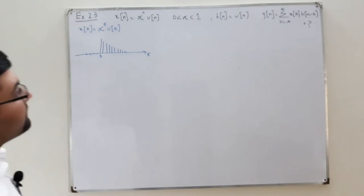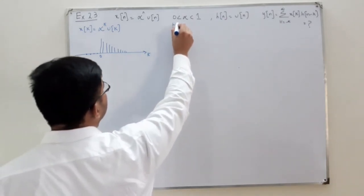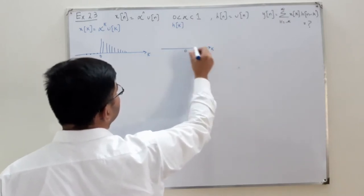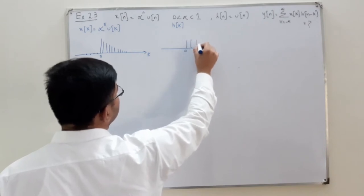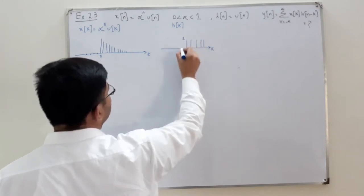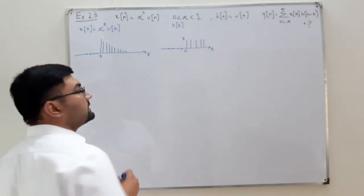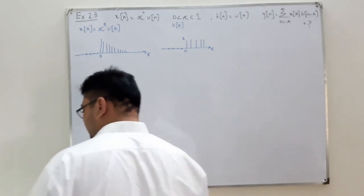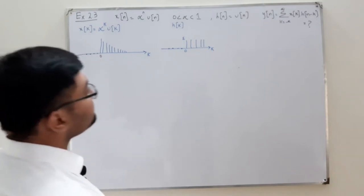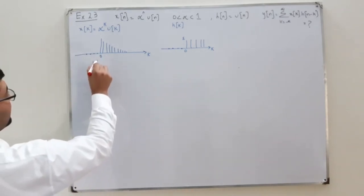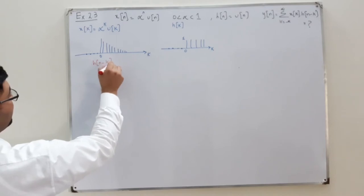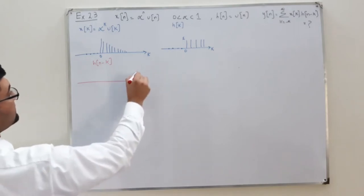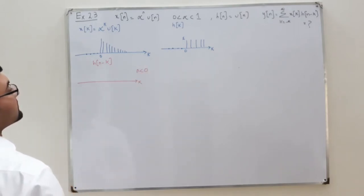Now h(k) would be u(k), which means it equals 1 for k greater than or equal to 0, and 0 on the left-hand side. The next step is the shifting: h(n minus k). If n is negative, you shift it to the left; if n is positive, you shift it to the right. So first consider n less than 0.